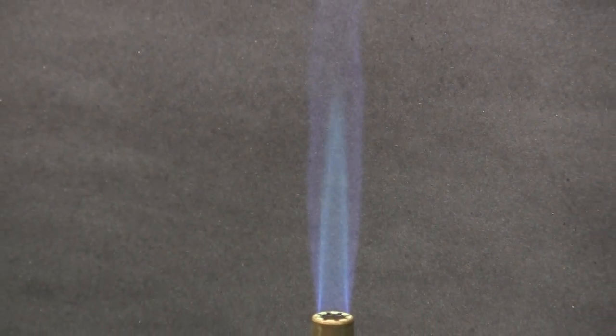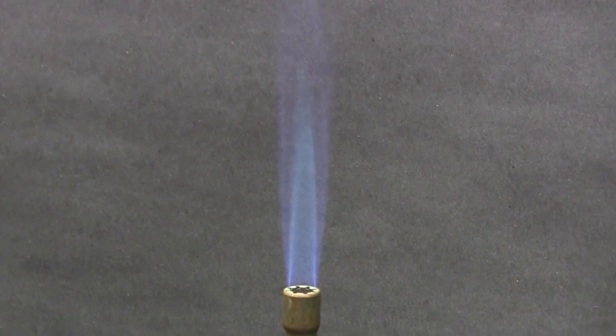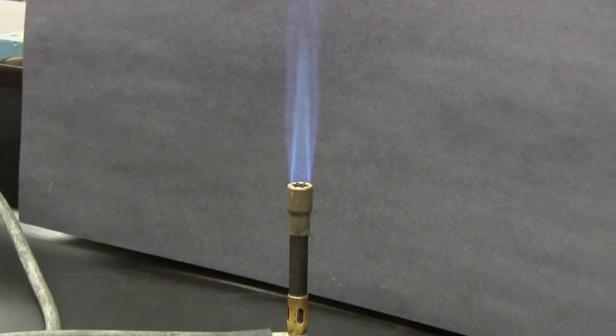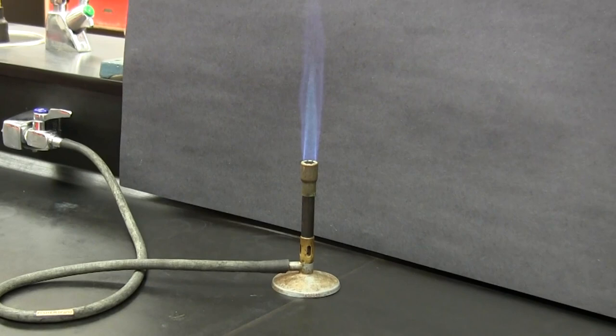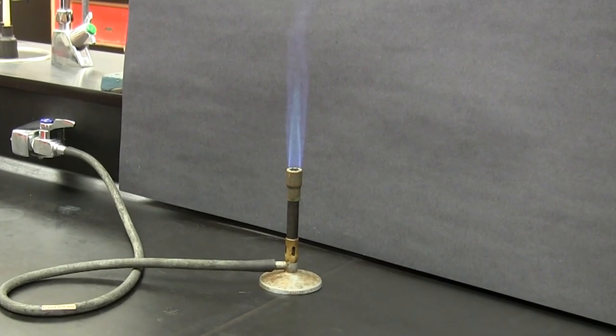So we shouldn't let the inner cone come in contact with any items we are heating because it's cold. The best practice is always to place the item being heated just outside the extreme tip of the blue cone, since this is the hottest part of the flame.